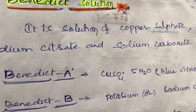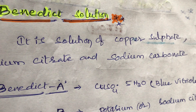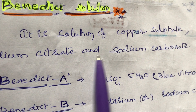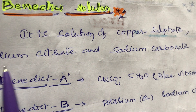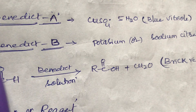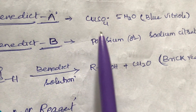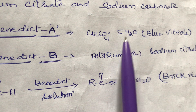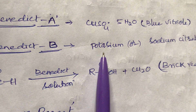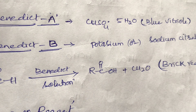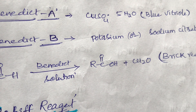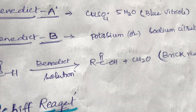The next mild oxidizing agent is Benedict's solution — a solution of copper sulfate, sodium citrate, and sodium carbonate. Benedict's solution A is pentahydrate copper sulfate (CuSO4·5H2O), blue vitriol. Benedict's solution B is potassium or sodium citrate. It oxidizes only aliphatic aldehydes, similar to Fehling's solution.